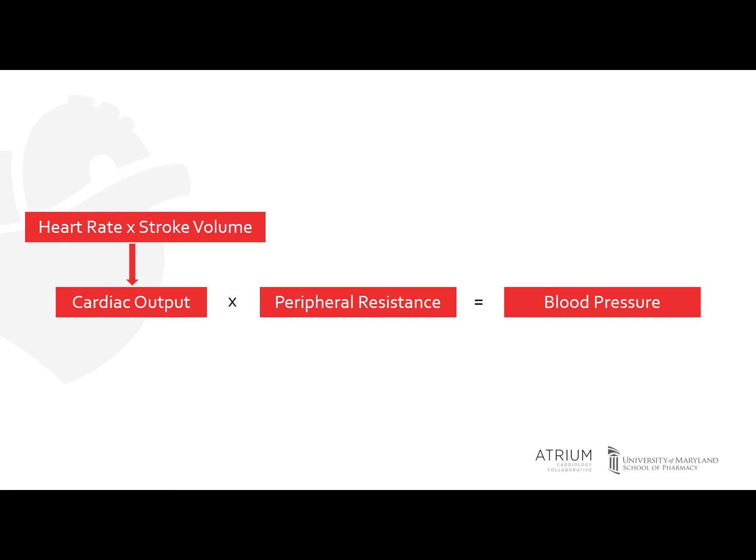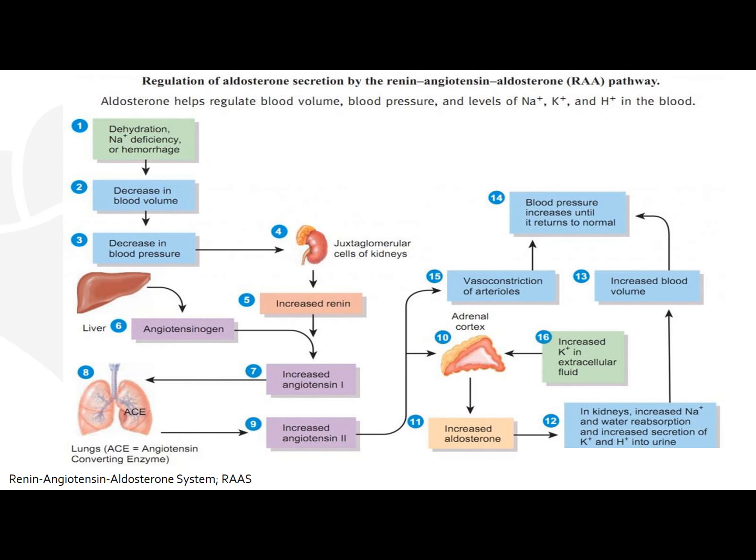Now that you understand what blood pressure consists of, this will help you understand some of the main mechanisms for hypertension. One of the main pathways we consider is the RAS system. There are several humoral abnormalities, including the RAS, natriuretic hormone, and hyperreninemia, that may be involved in hypertension.